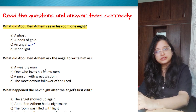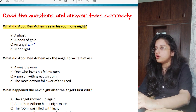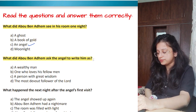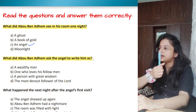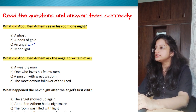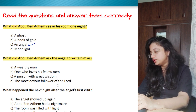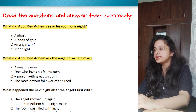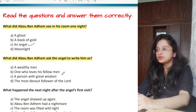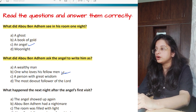Next question: what did Abu Ben Adham ask the angel to write him as? Options: as a wealthy man, as one who loves his fellow men, as a person with great wisdom, or as the most devout follower of the lord. Whoever has listened to the summary will easily know this. The correct option is option B — as one who loves his fellow men.